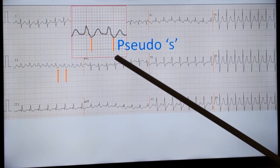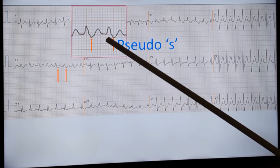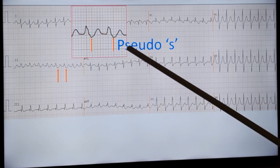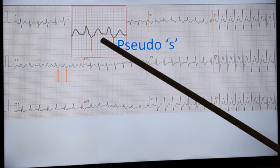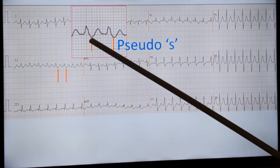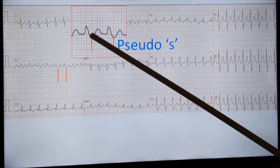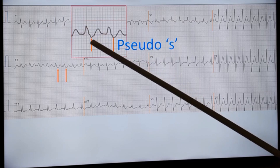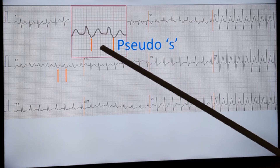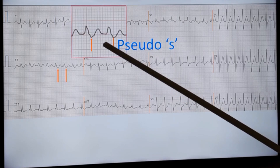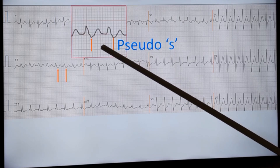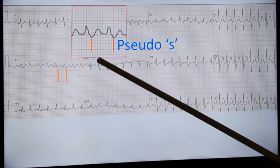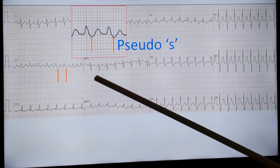In this type of tachycardia, when such retrograde P-waves are seen — this is an amplified view — they are known as pseudo-S waves because they appear like an S wave after the QRS. The R wave is here, and this could be called an S wave. But they are very small and are not true S waves; they are retrograde P-waves which appear negative in this lead. They are known as pseudo-S waves in this particular form of tachycardia.